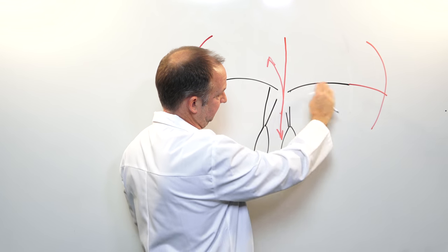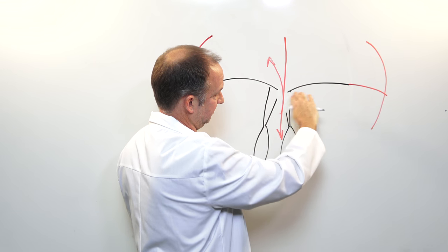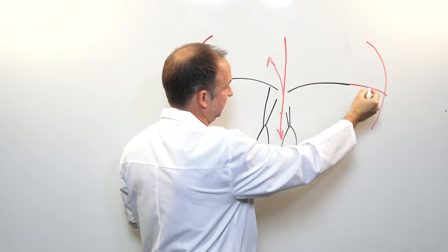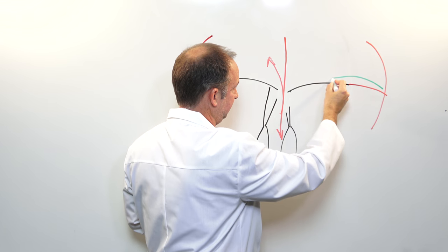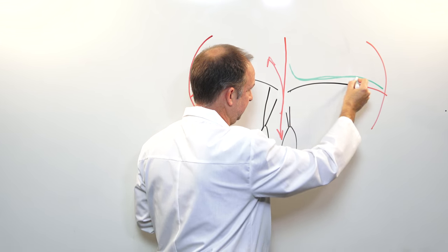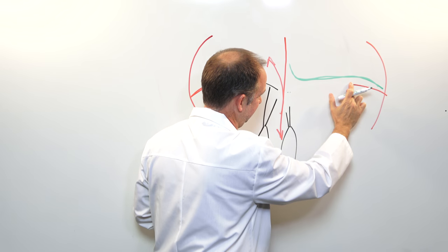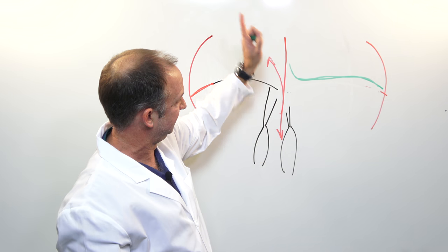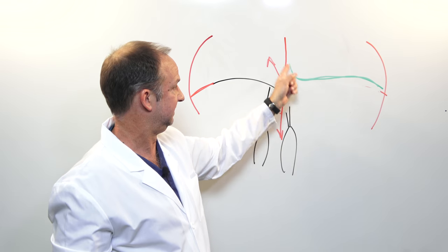instead of a leaflet being nice and flat or a little bit curved, the leaflet does one of these numbers. The tip is actually billowing or flapping back into the left atrium.